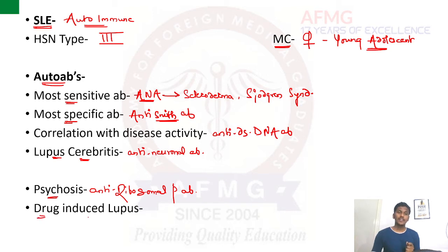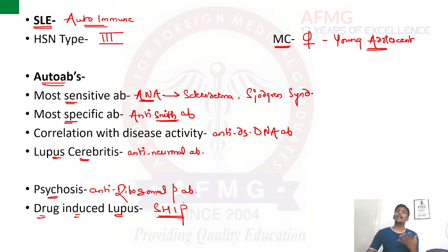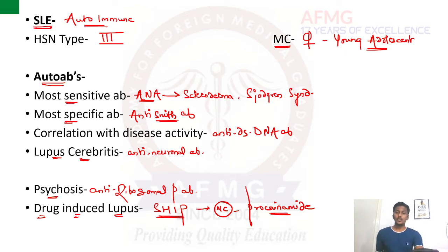Drug-induced lupus or drug-induced SLE is caused by the SHIP group of drugs: S for sulfonamides, H for hydralazine (anti-hypertensive), I for isoniazid (first-line anti-tubercular agent), and P for procainamide (an anti-arrhythmic drug). The most common SHIP drug causing SLE is procainamide. In drug-induced SLE, the autoantibody produced is known as anti-histone antibody.